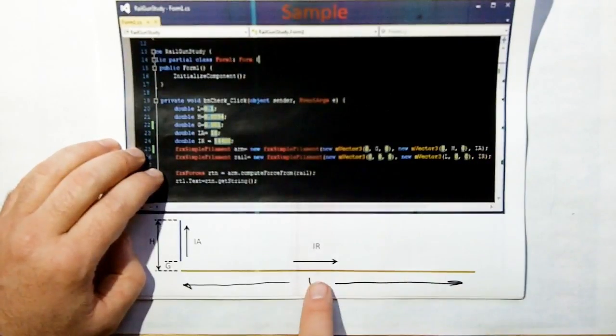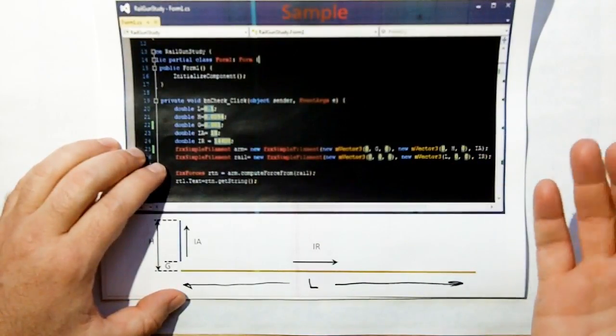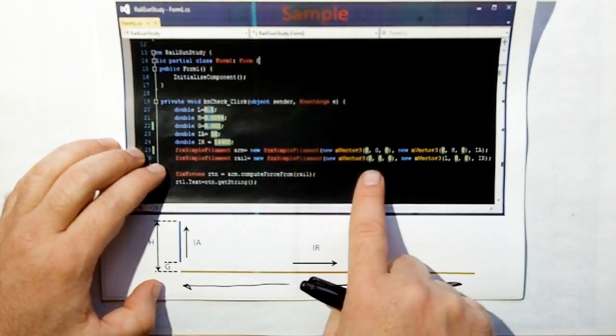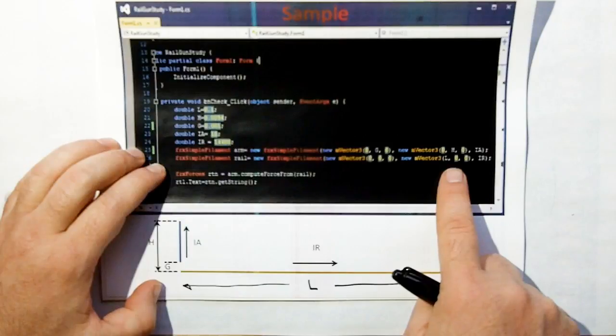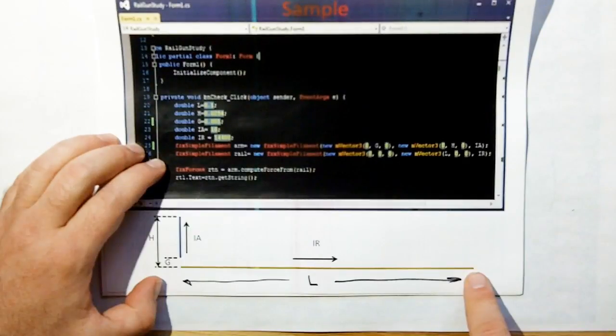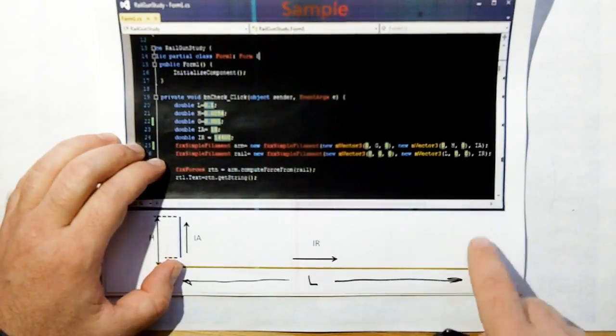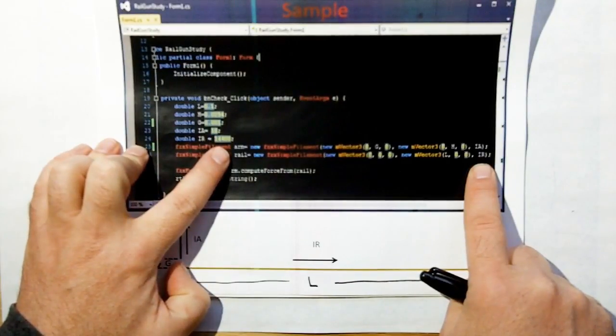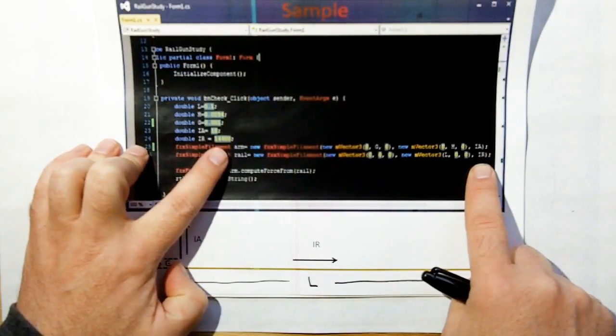Then you have the rail or in this case the edge current of a magnet. It goes from the origin 0,0,0 to X equal L, Y and Z equals 0, so it's just a wire of length L starting at the origin with the current of the rail, which is one of the edge currents of the magnets, 14,400 amps.